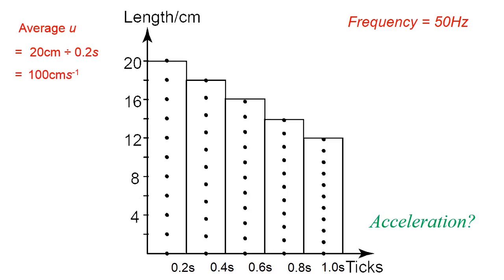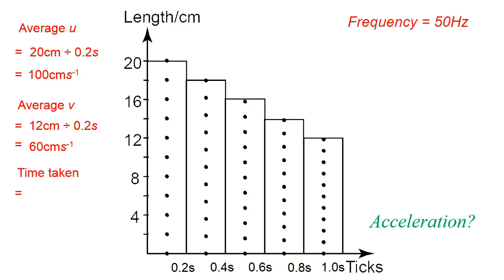Remember, this is the average initial velocity. Now we calculate the average final velocity. Take the length of the final strip, which is 12 cm, and divide by the time taken for this 10-tick strip — 0.2 seconds — giving 60 cm per second. For the time taken, it's a bit special. You cannot just take the total time of 1 second. Since we use the average initial and average final velocity, the starting point should be the midpoint of the first strip and the end point should be the midpoint of the last strip.